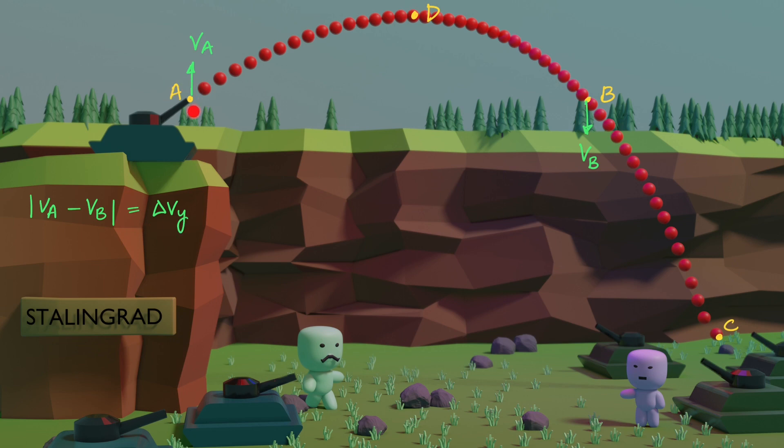Consider both the points A and B. When the body goes from A to B, the work done by the gravitational force is 0 and the work done by the resistive forces is negative, which means the kinetic energy at B is less than at A. So the velocity at B is lesser than the velocity at A. So we can remove this modulus and we can write Va minus Vb equals delta Vy.